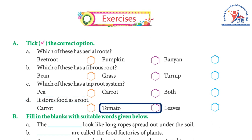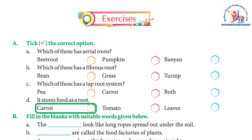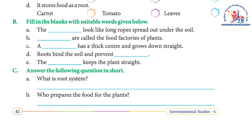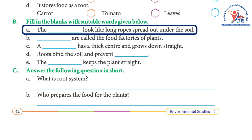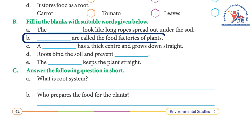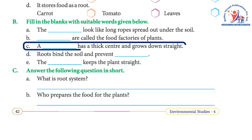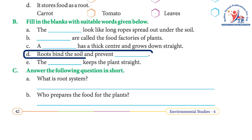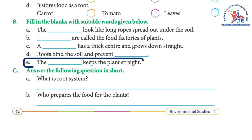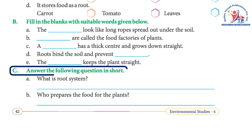Exercise B — Fill in the blanks. a) The roots look like long ropes spread out under the soil. b) Leaves are called the food factories of plants. c) A taproot has a thick center and grows down straight. d) Roots bind the soil and prevent soil erosion. e) The stem keeps the plant straight.